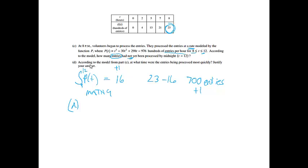Okay, part D. According to the model from part C, at what time were the entries being processed most quickly? So if I'm looking for process most quickly, that is a maximum. And I want to know, if I want to know it was being processed the most quickly, I want to know when is the rate a max.